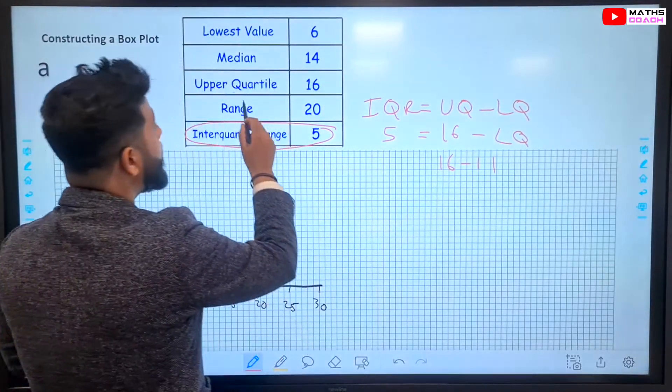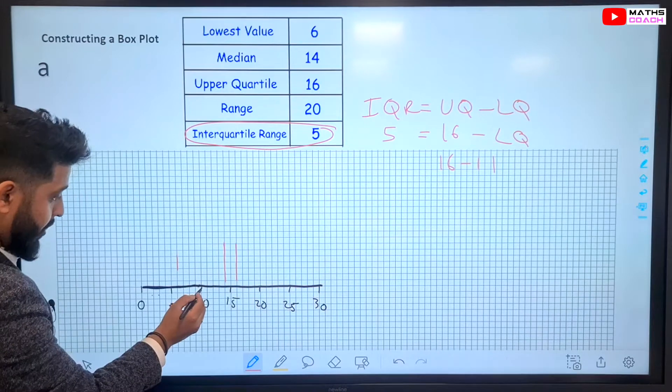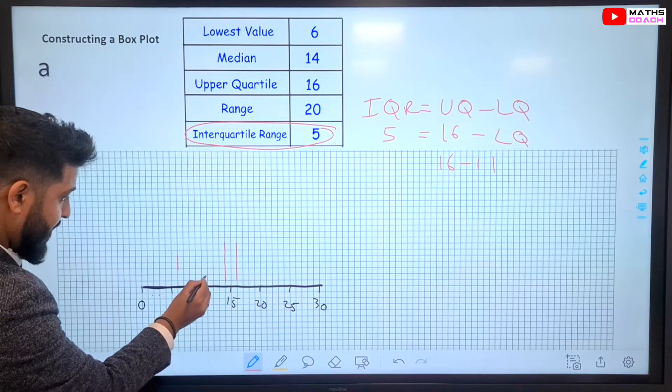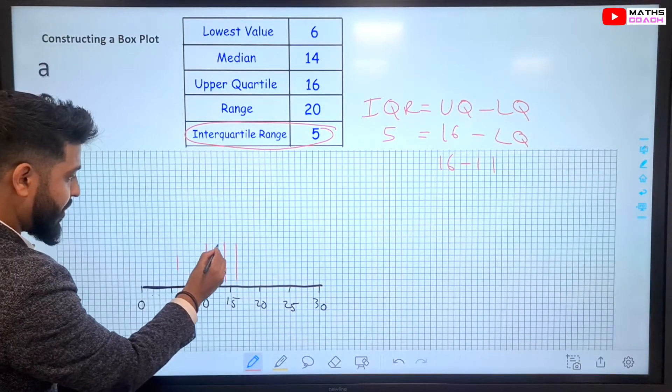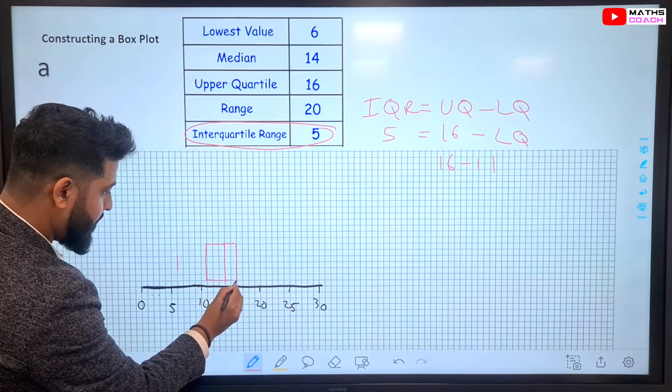So, therefore, the lower quartile is 11. So, we go to 11 right there. And we make this the same size. And we can now complete our box. And this will line up there.